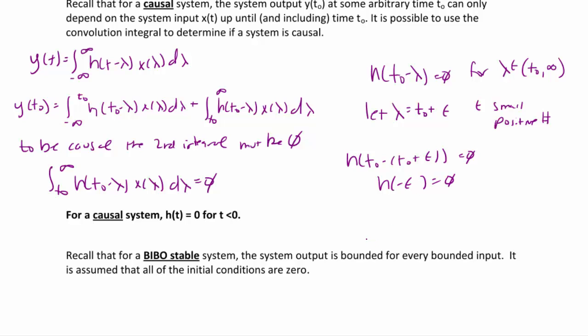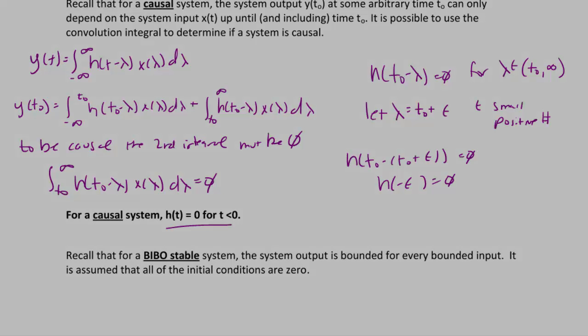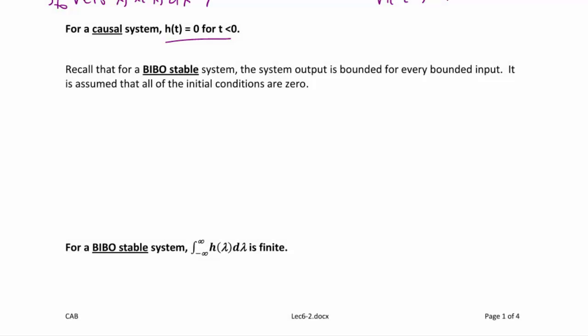This yields the following result: for a causal system, h(t) must equal zero for t less than zero. Recall that for a BIBO stable system, the system output is bounded for every bounded input. It is assumed that all the initial conditions are zero.